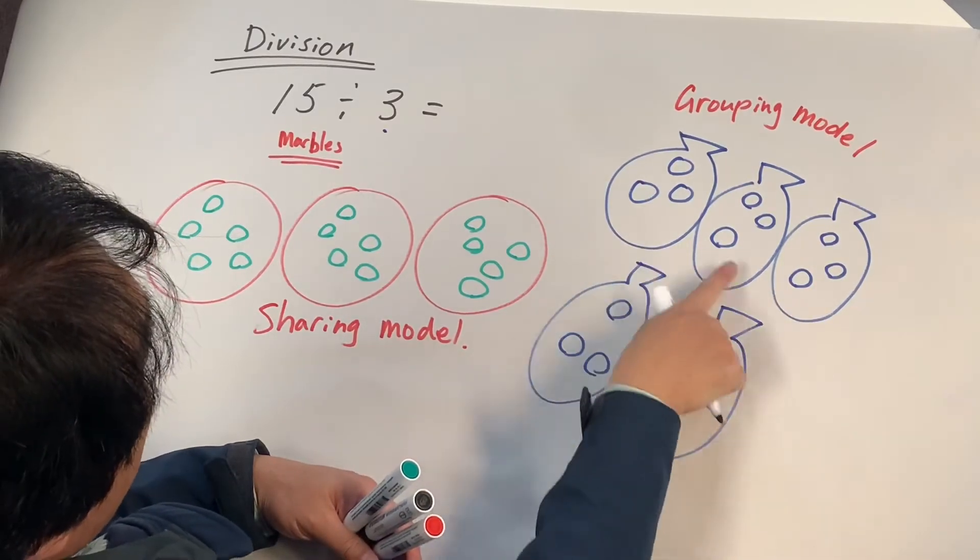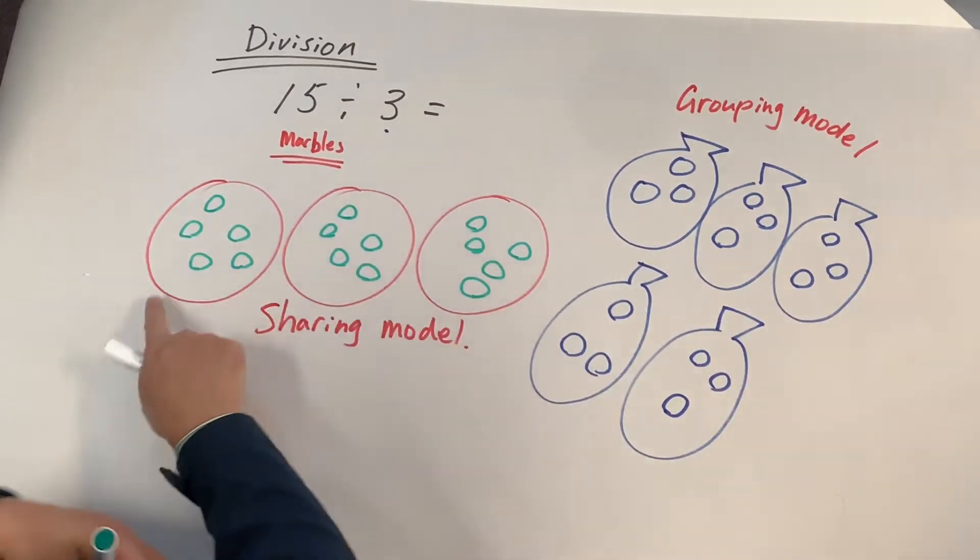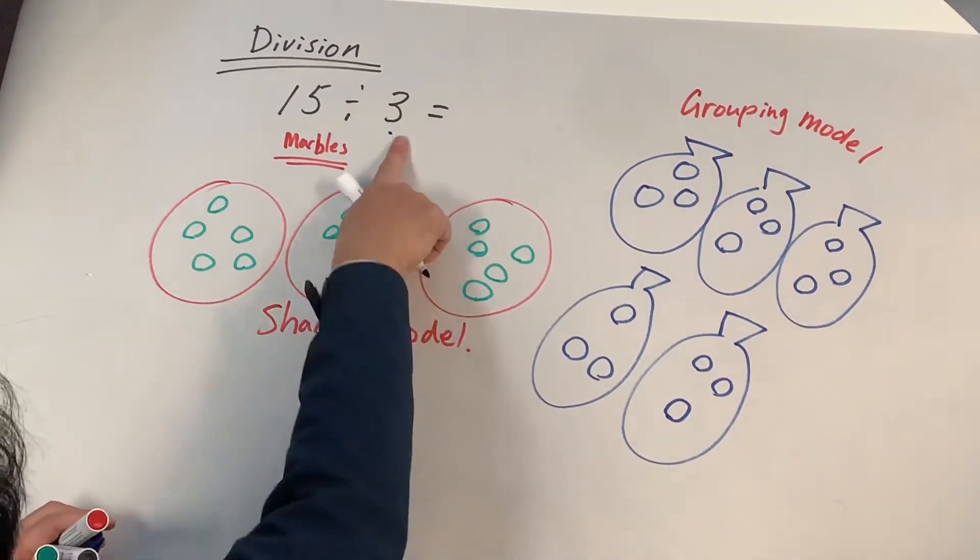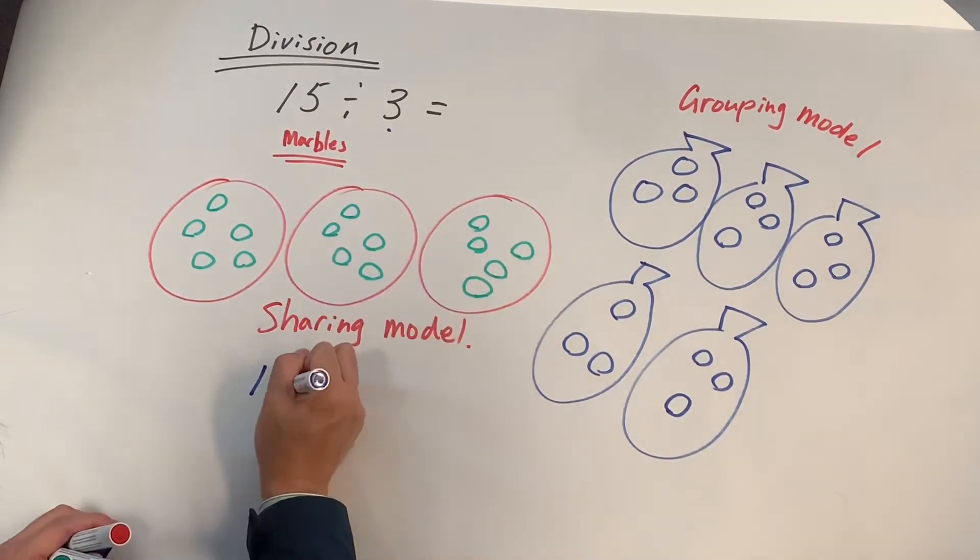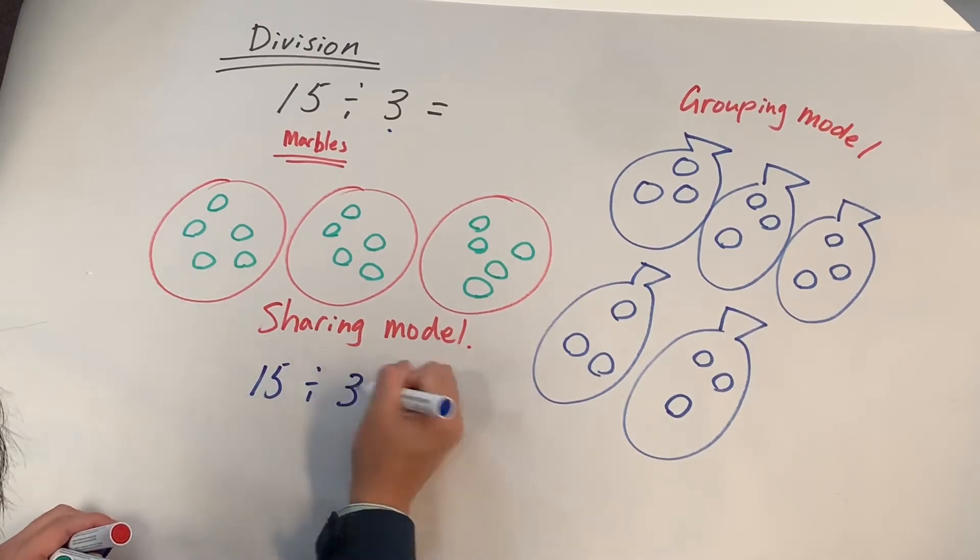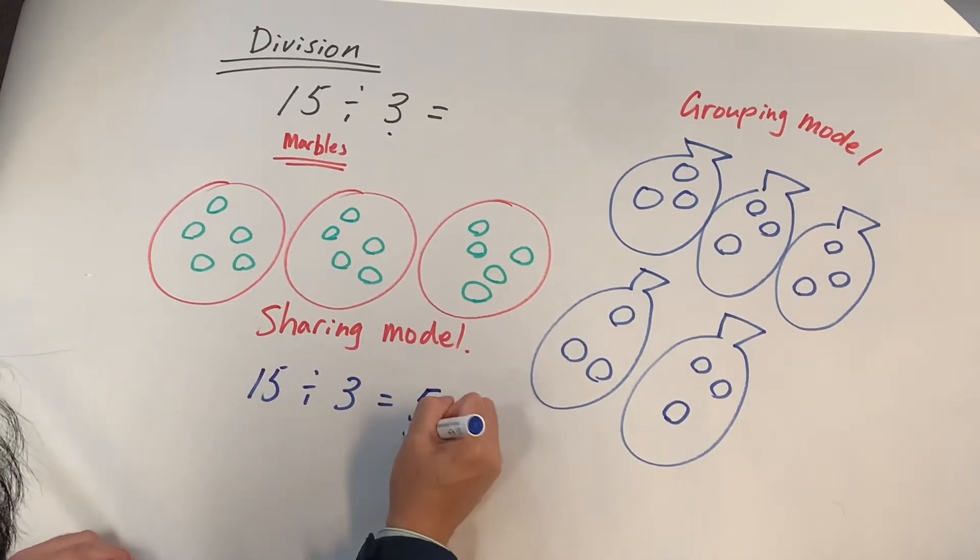I have five bags. Sharing model: 15 marbles divided by three people or shared by three people. The answer is five. If I share 15 marbles by three people, each person will have five marbles.